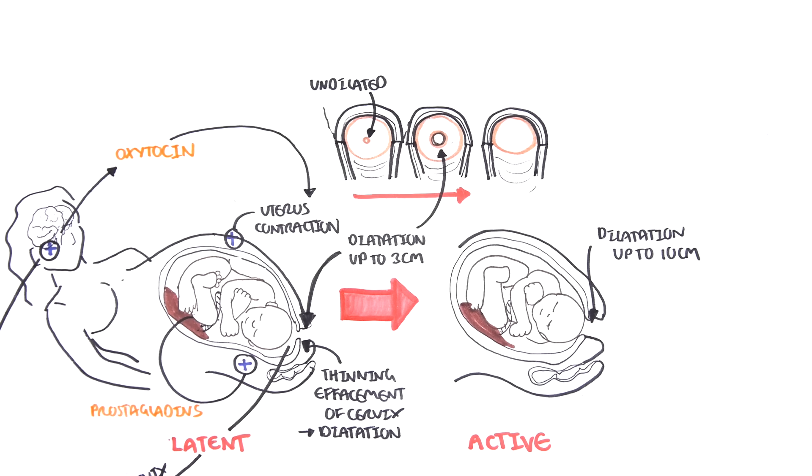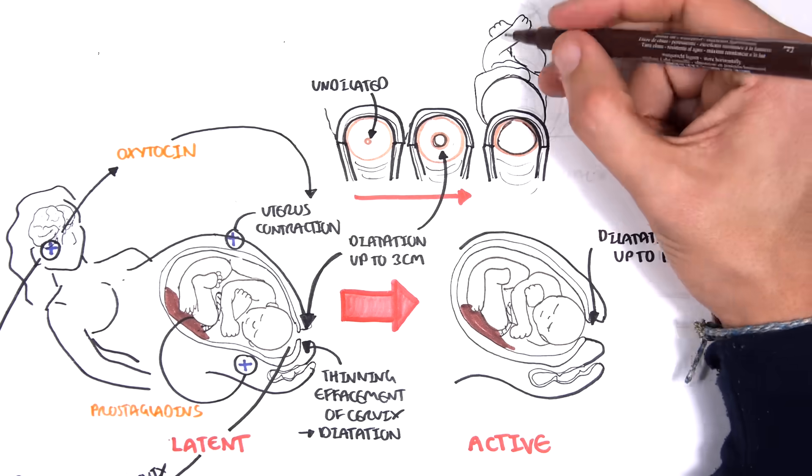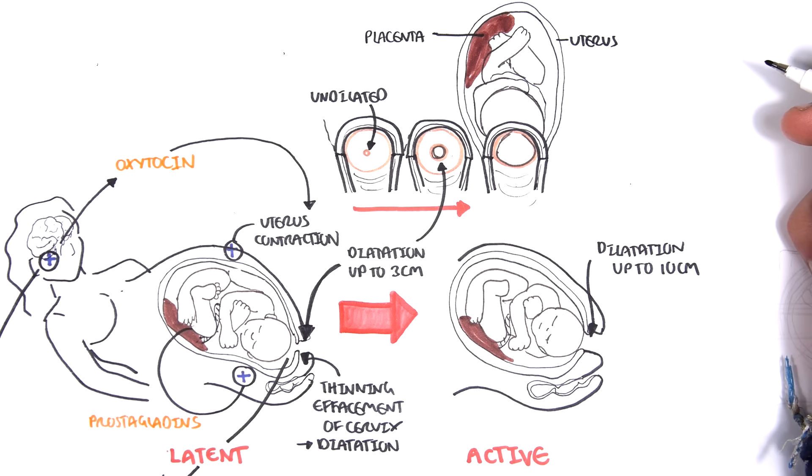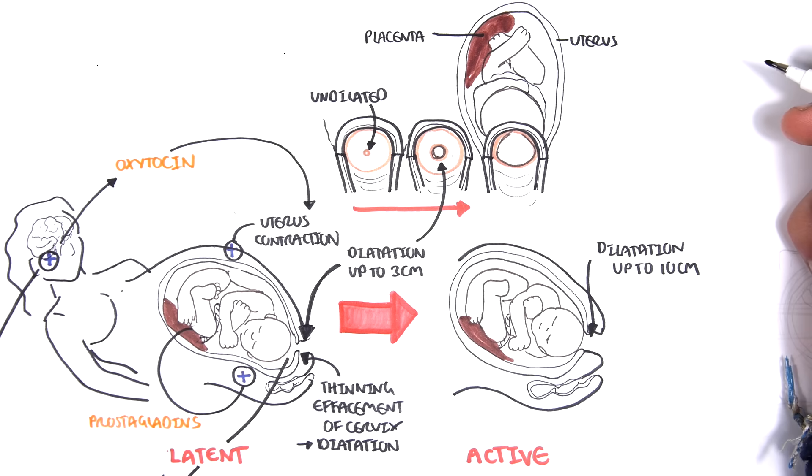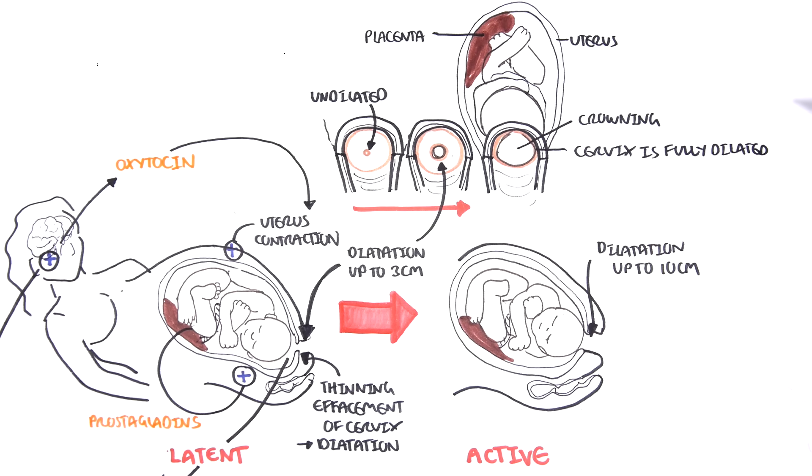Looking at the cervix from the front again, here you can see the baby, the placenta and the uterus. The uterus is where the baby is in. This is crowning, where the cervix is fully dilated and you can see the head of the baby coming down. This is the vaginal wall.